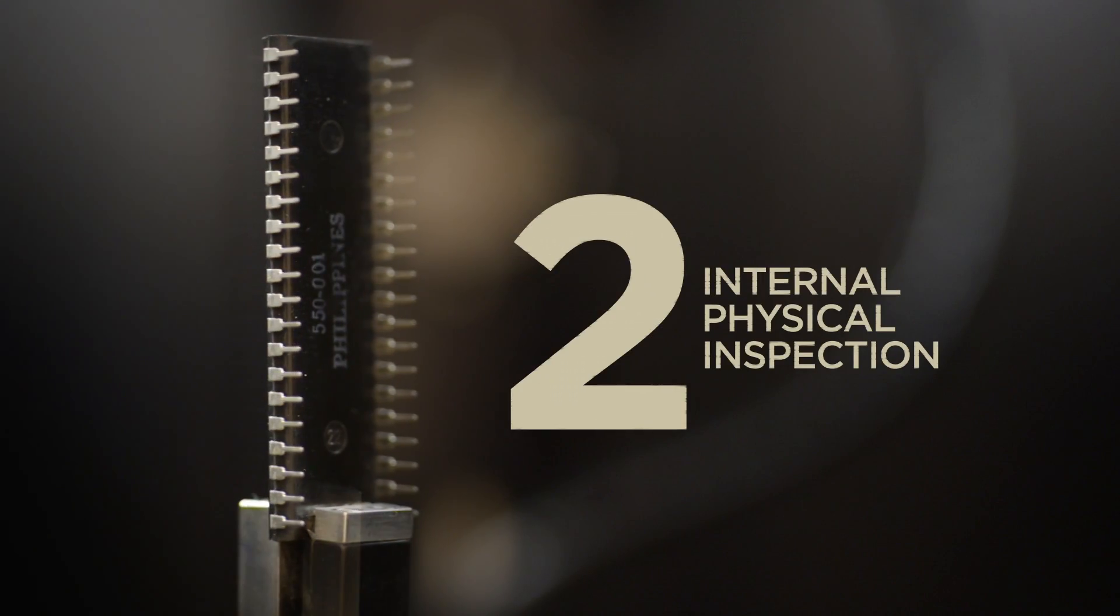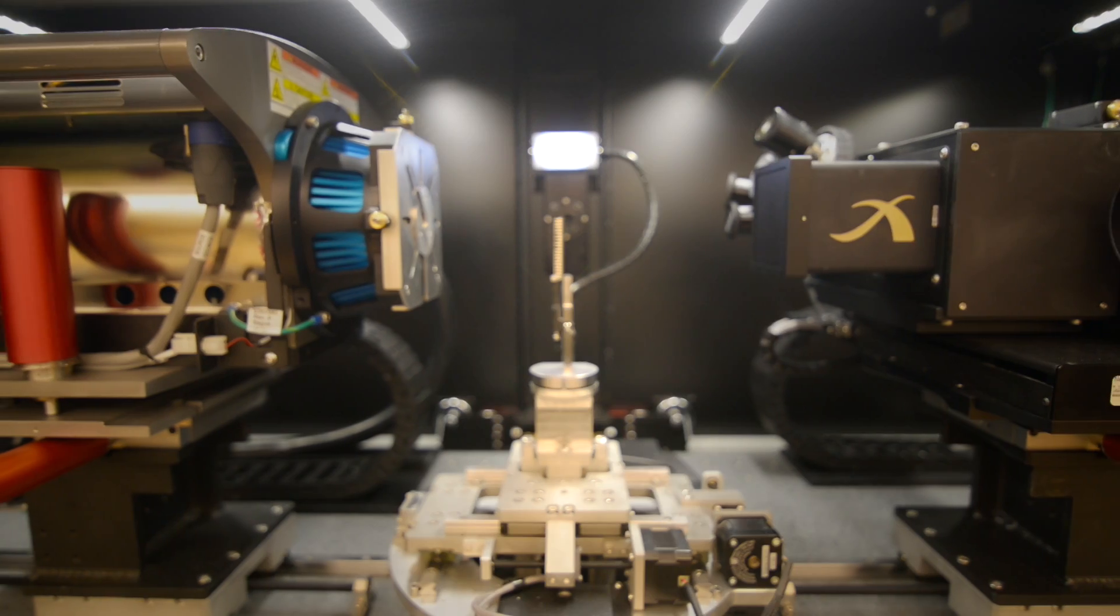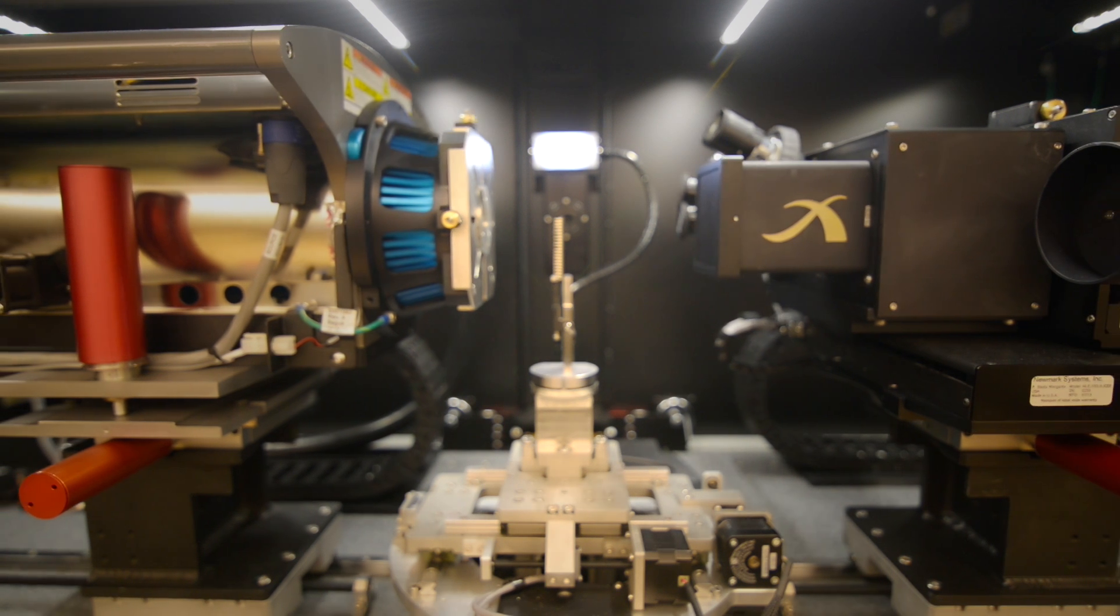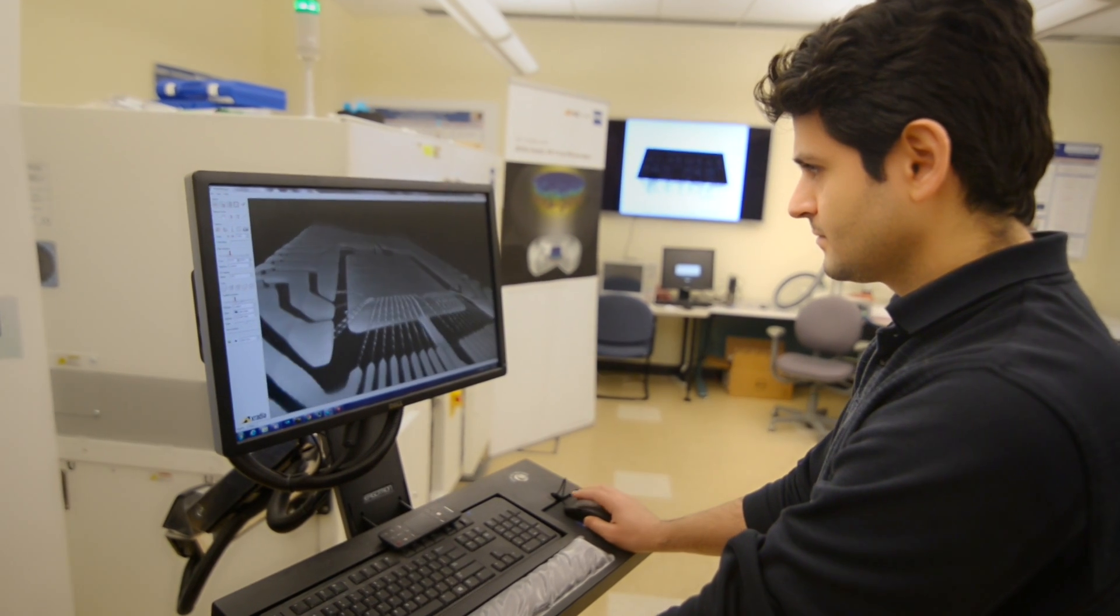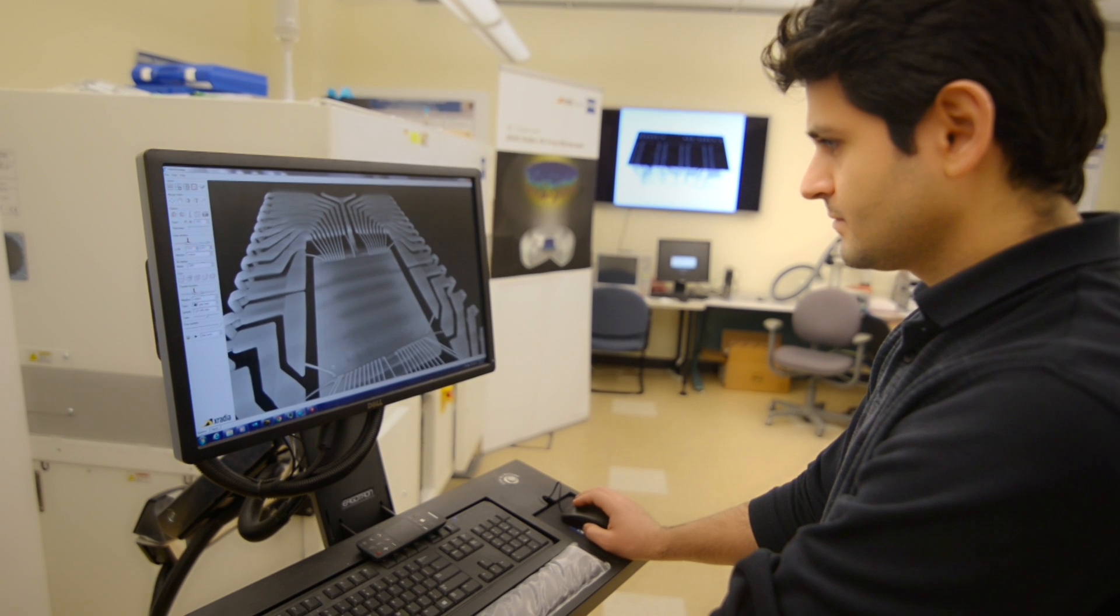Step 2 is an internal physical inspection. We place the chip in a 3D x-ray microscope and examine it, layer by layer, looking for clues that the chips have been hacked.